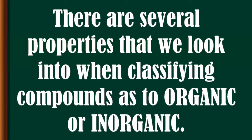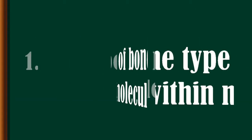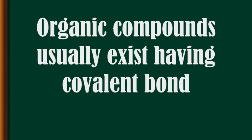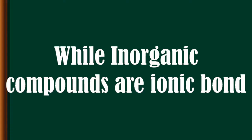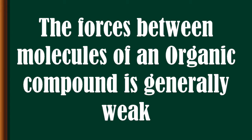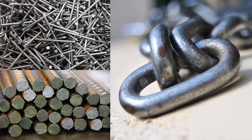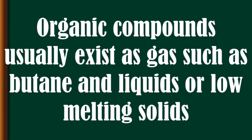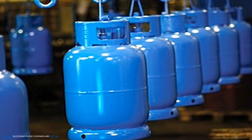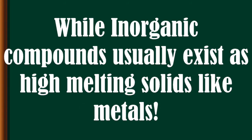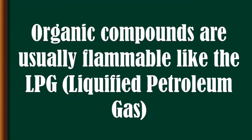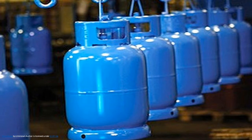There are several properties we look at when classifying compounds as organic or inorganic. These include the type of bonding between molecules. Organic compounds usually exist with covalent bonds, while inorganic compounds have ionic bonds. The forces between molecules of an organic compound are generally weak, while they are very strong in inorganic compounds. Organic compounds usually exist as gases such as butane, or liquids or low-melting solids, while inorganic compounds usually exist as high-melting solids like metals. Organic compounds are usually flammable, like LPG or liquefied petroleum gas.